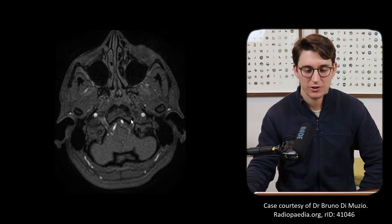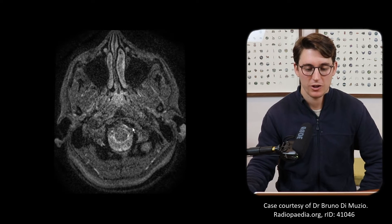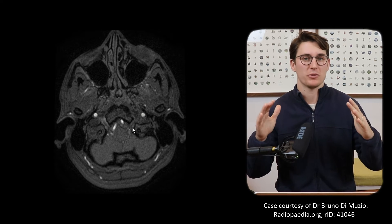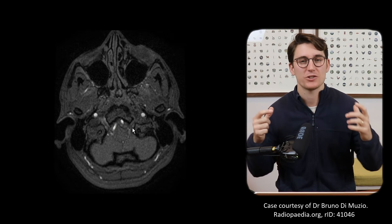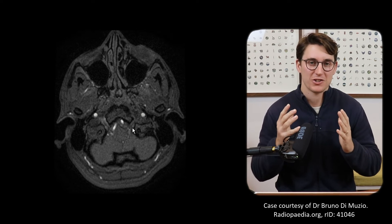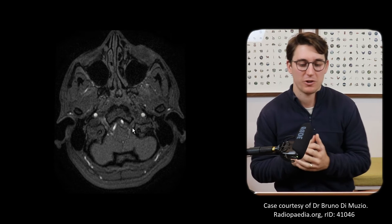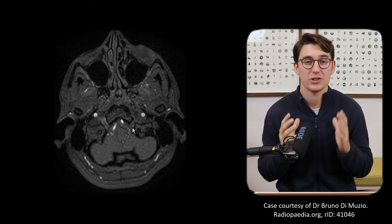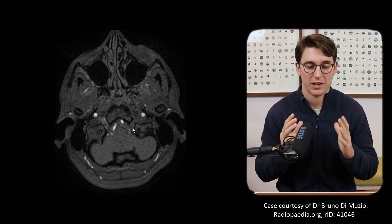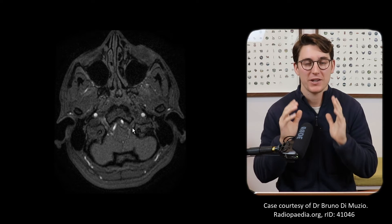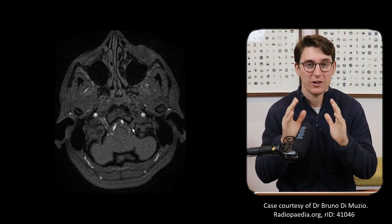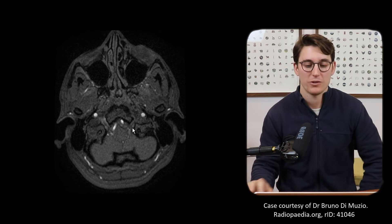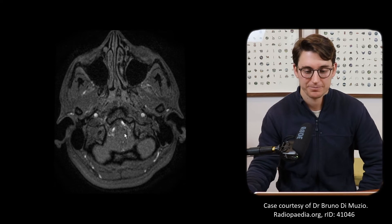Let's head back down to our vertebral arteries. That 2D image just showed our vertebral arteries starting, but it's good to remember where they actually came from. The vertebral arteries come off our subclavian arteries, off the first segment of the subclavian, making their way up the neck through the transverse foramina of the cervical spine before heading into the foramen magnum where we pick them up.